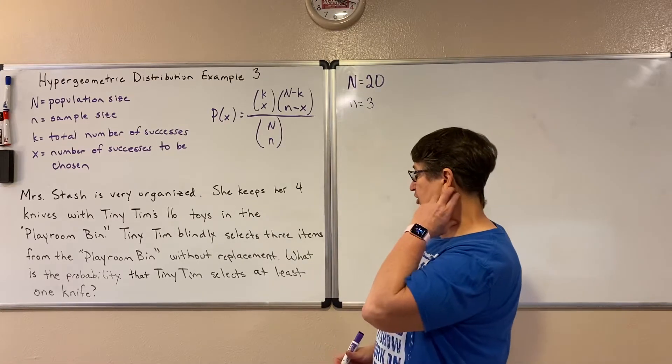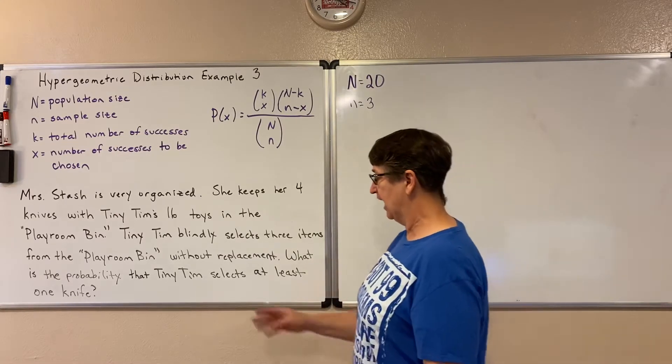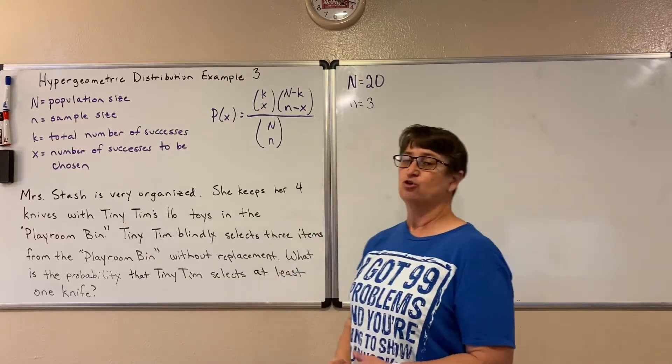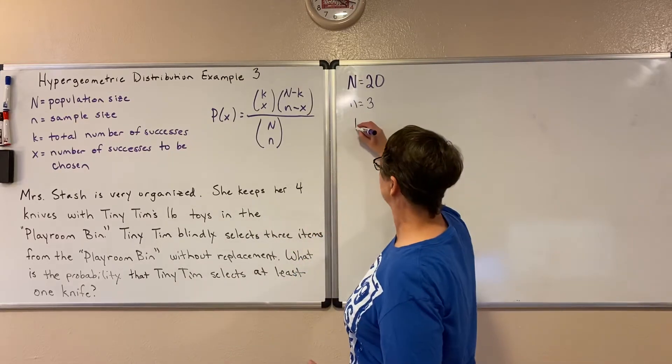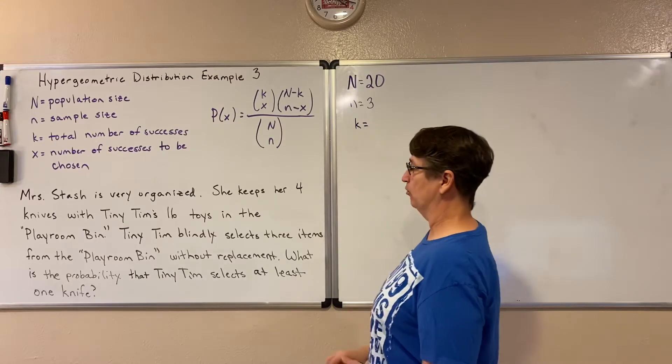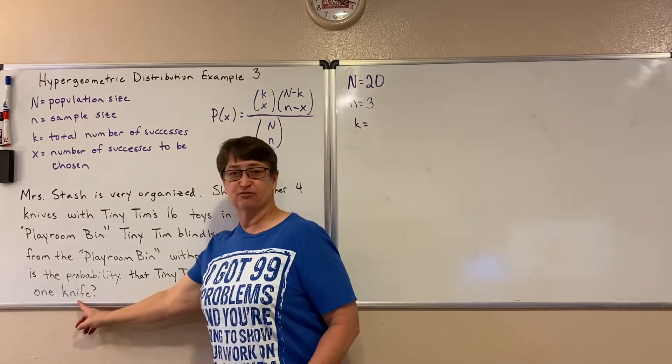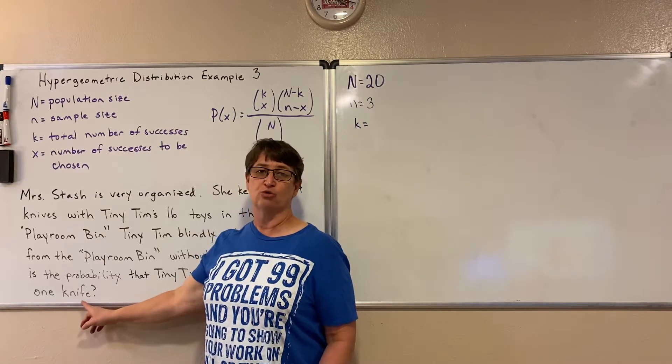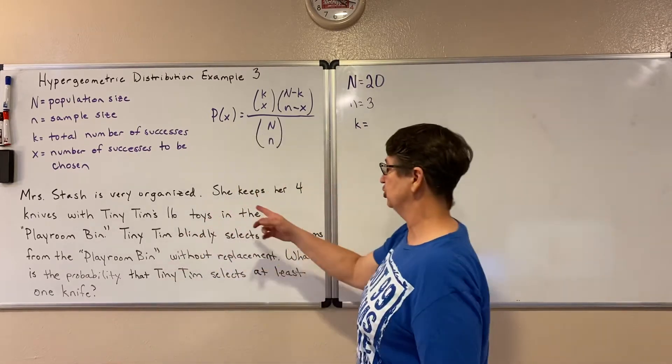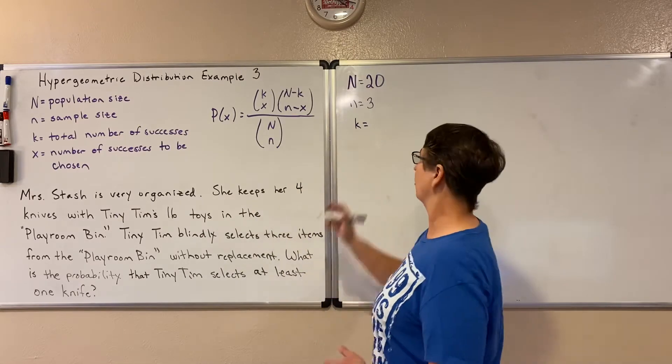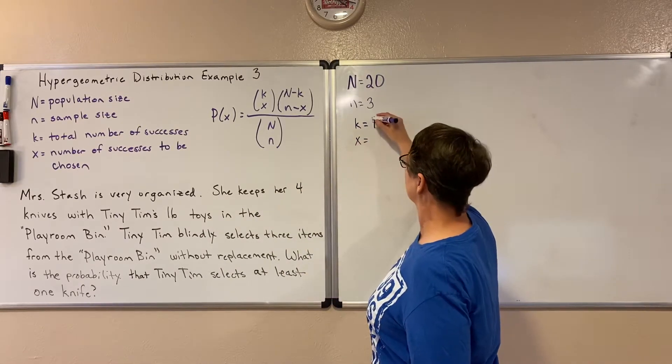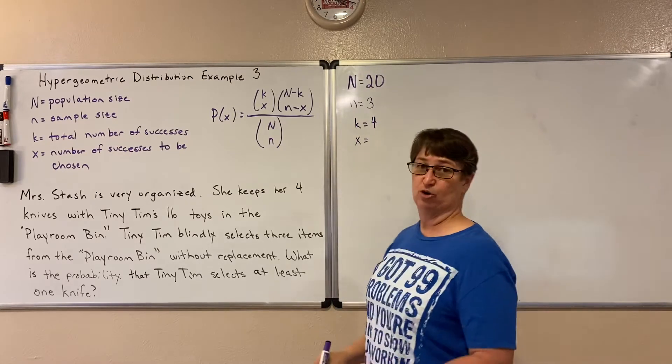Now we also need to know what is the probability that Tiny Tim selects at least one knife. So our K is the total number of successes that we have. In this case, our success is for him to choose a knife. So we want to know the total number of knives in our population and that is four. And Tiny Tim is going to choose at least one of those, at least one.